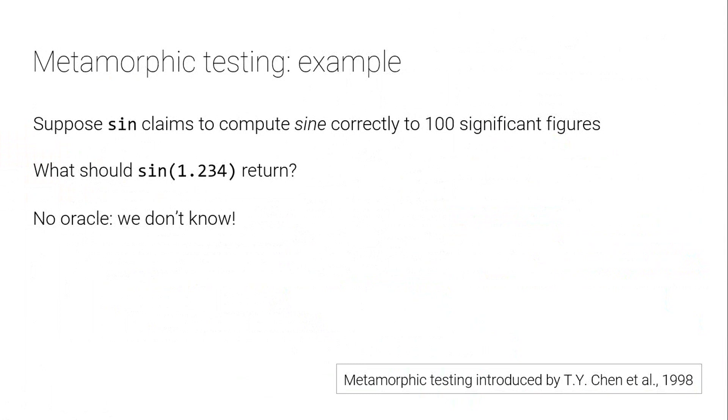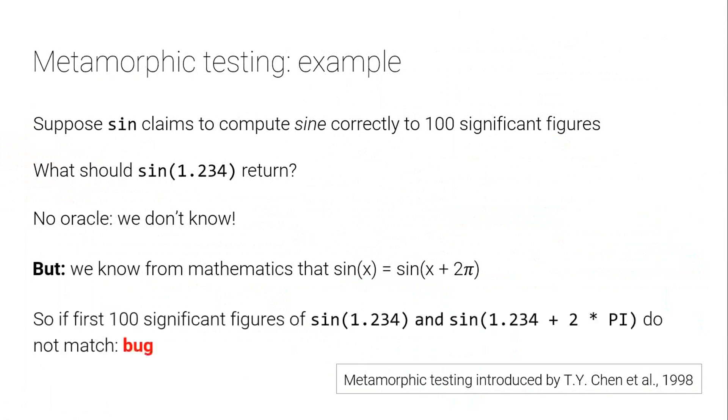You could try and work it out manually or you could use another implementation as a reference, but that implementation might itself be wrong. So you don't have an oracle a priori, but we know a few things. We know the claim about this function, it's going to compute things correctly to a hundred significant figures. And we also know quite a lot about trigonometry from school. So we know, for example, that sine of x is the same as sine of x plus 2 pi for real numbers for any x. So what we could do is we could try sine of 1.234 and we could try sine of 1.234 plus 2 times pi. And we could ask, are these results the same up to 100 significant figures? And if they're not, then there's a bug in our implementation of sine, right? Because we know from mathematics they should be the same as real numbers, and we know that sine, our implementation, is meant to have this guarantee.